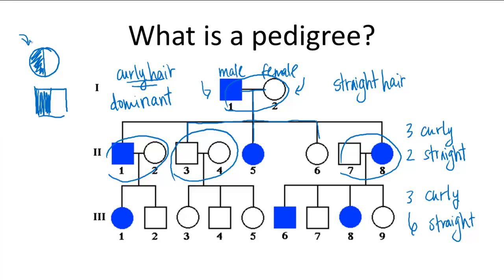And carriers are not always shown. So be careful when reading a pedigree chart. Just because it doesn't have half colored in individuals does not mean that it's a dominant trait. So this is how you read pedigree charts and pedigree charts are useful tools for analyzing patterns of inheritance.